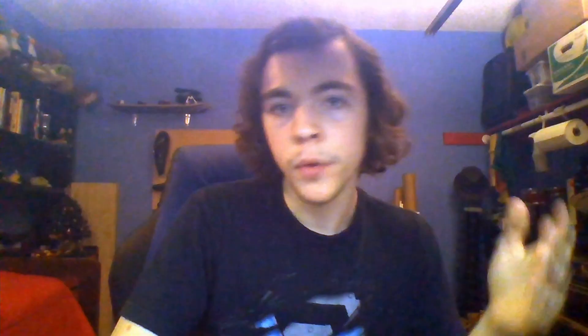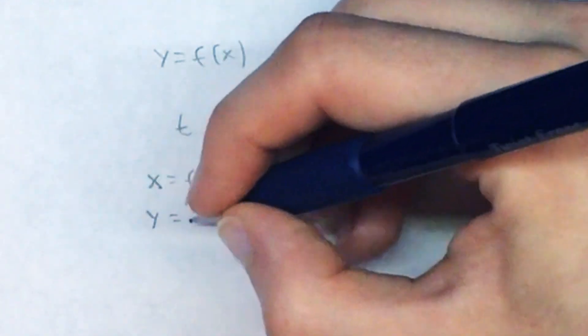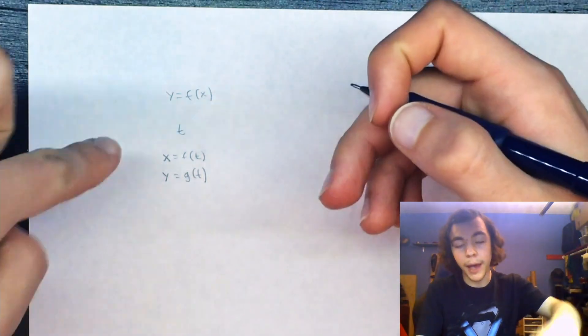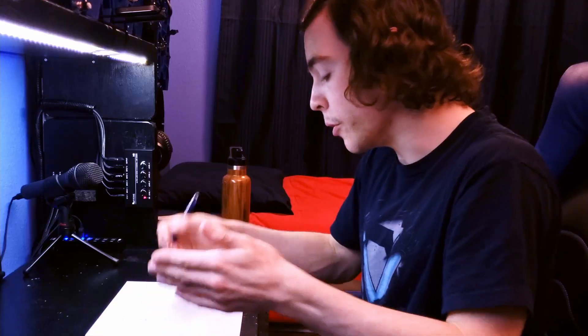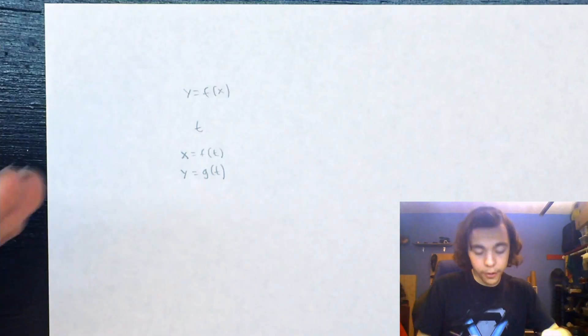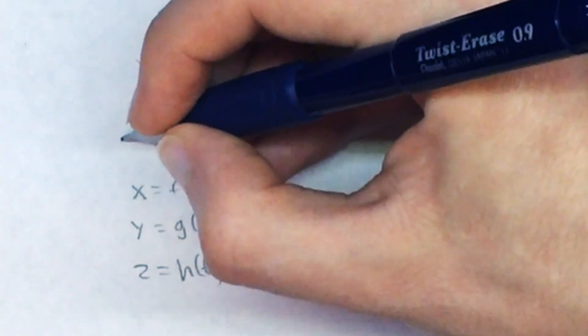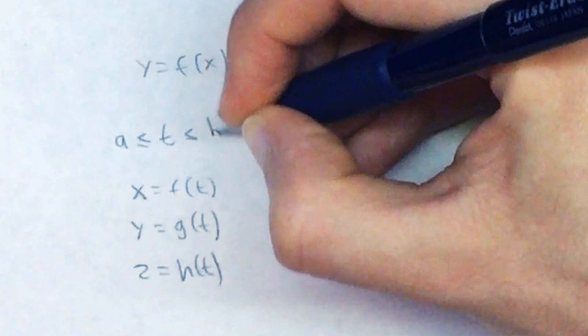Let's work our way up. First we had regular old functions, Y equals F of X. Then we said, what if instead we have some variable T — which could maybe represent time — and make two separate functions for X and Y, both in terms of T? That way, as T goes on, X does one thing and Y does another, so your 2D playhead draws out some curve on this plane — that's your parametric curve. Then we said, what if we want it in 3D? Literally just add another equation for Z. That's how we defined vector functions: parametric equations for X, Y, and Z, all in terms of T, going from one constant starting point to another constant ending point.